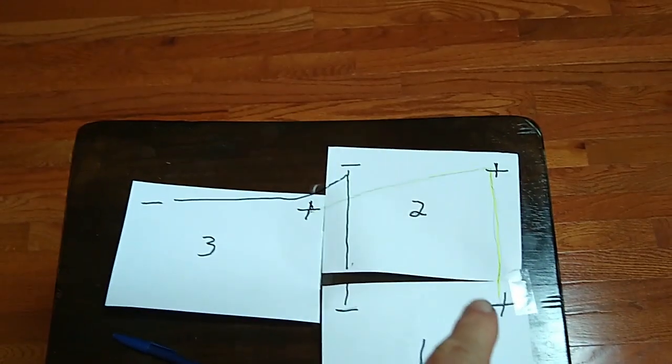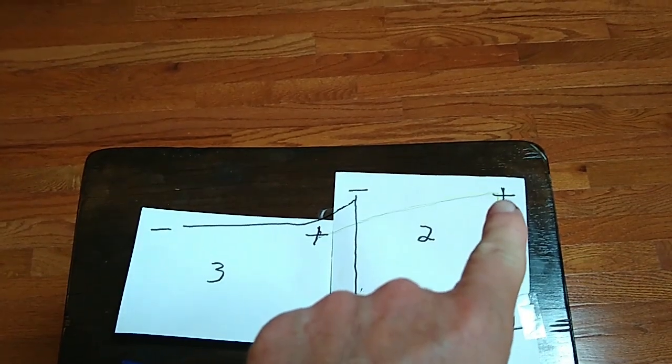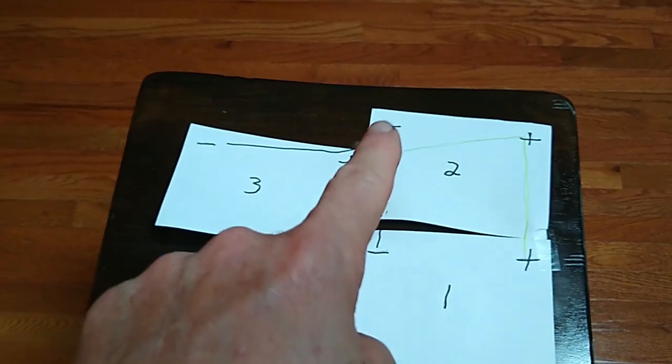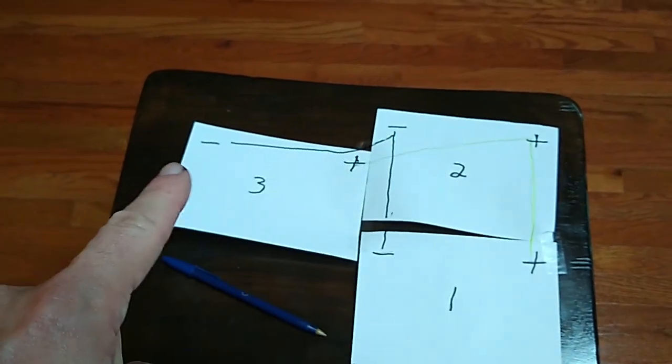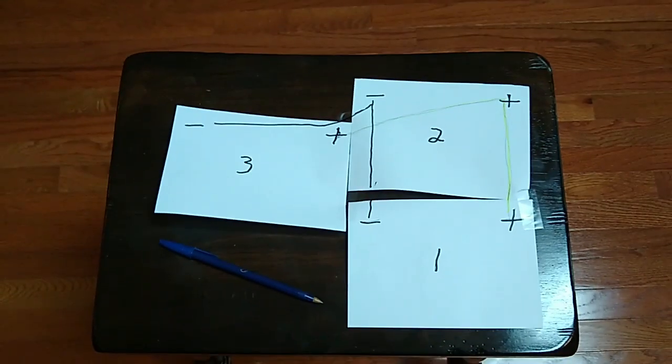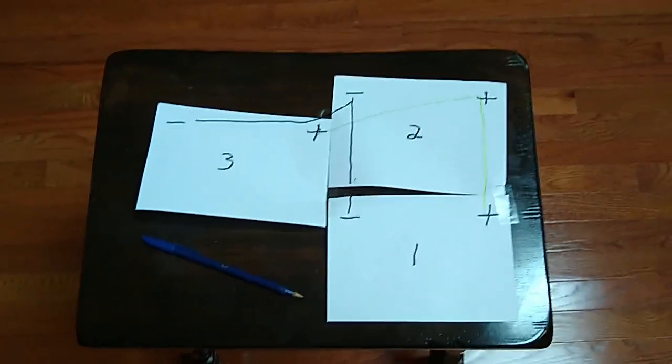You go take a wire from positive to positive then take another wire from positive to positive. Okay same with the negative. A wire from negative to negative then another wire from negative to negative. Now you've completed your batteries in parallel and made batteries one, two and three one big battery.